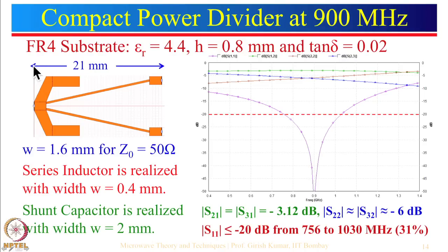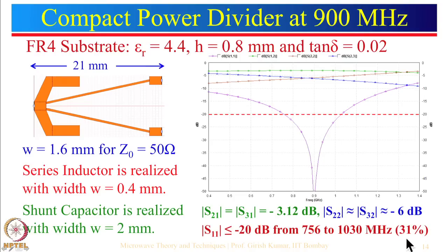The series inductor is realized with width 0.4 mm and shunt capacitance with width 2 mm. The overall size is only 21 mm. If smaller size is required, small bends can be used to reduce it further. The S11 plot shows about 31 percent bandwidth — comparable to the lambda/4 transformer. S21 = S31 = minus 3.12 dB, smaller loss than the lambda/4 transformer's 3.3 dB. S22 and S33 are approximately minus 6 dB at center frequency since no isolation resistance is used.